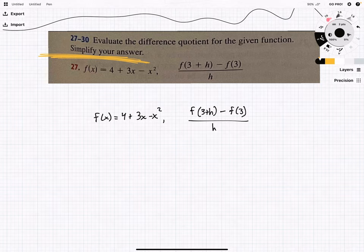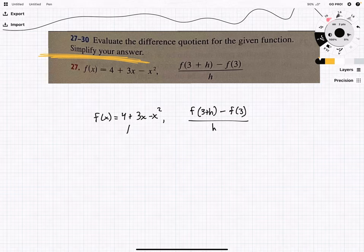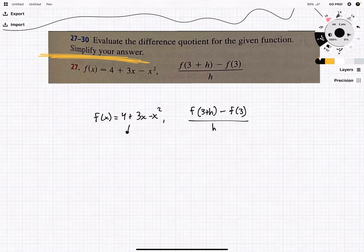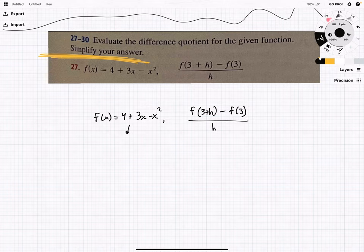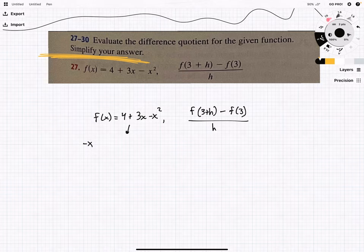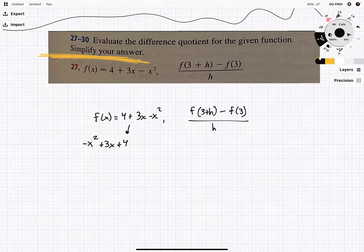Okay, well, there's a couple of things that we should do first. First, let's rearrange f of x in a more coherent manner, just so it's a little bit easier to work with. I always like having the highest order polynomials first. So let's have negative x squared plus 3x plus 4.